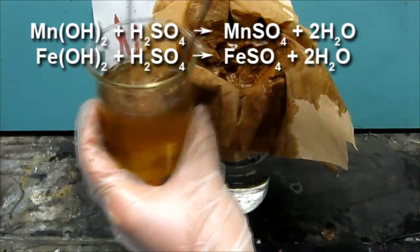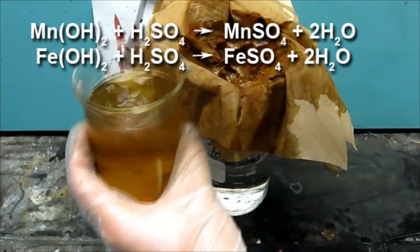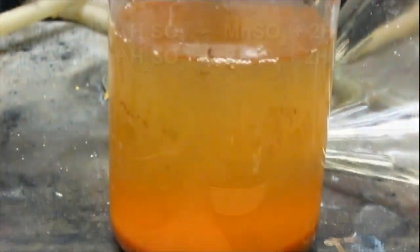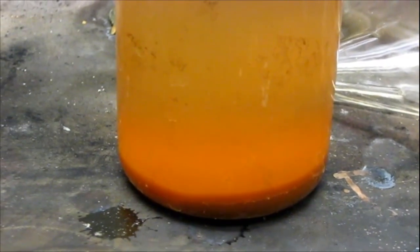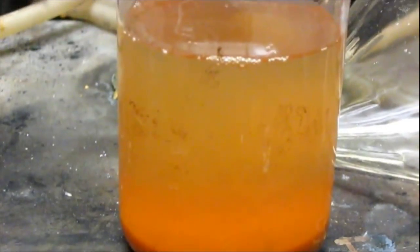Anyway, what's happening is we're first reacting away any remaining sulfuric acid. Now for the next step you need to have an excess of the precipitates. If the solution goes clear or chunky but not cloudy then you need to do it again.